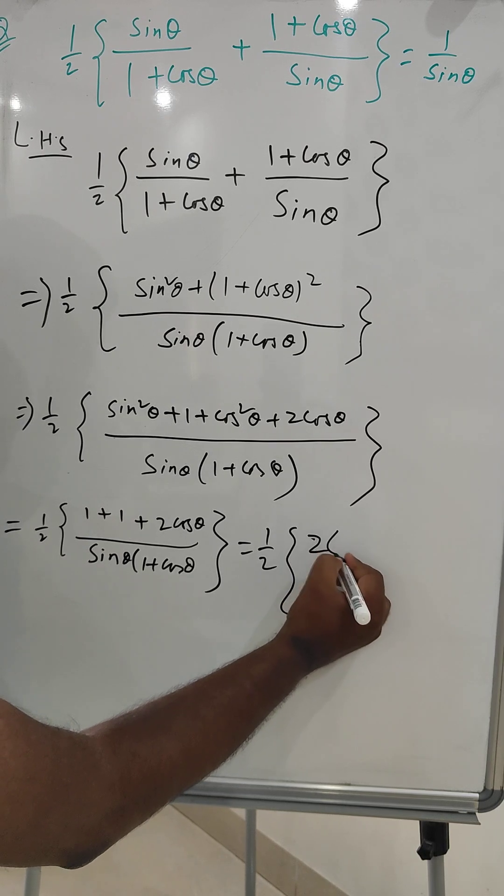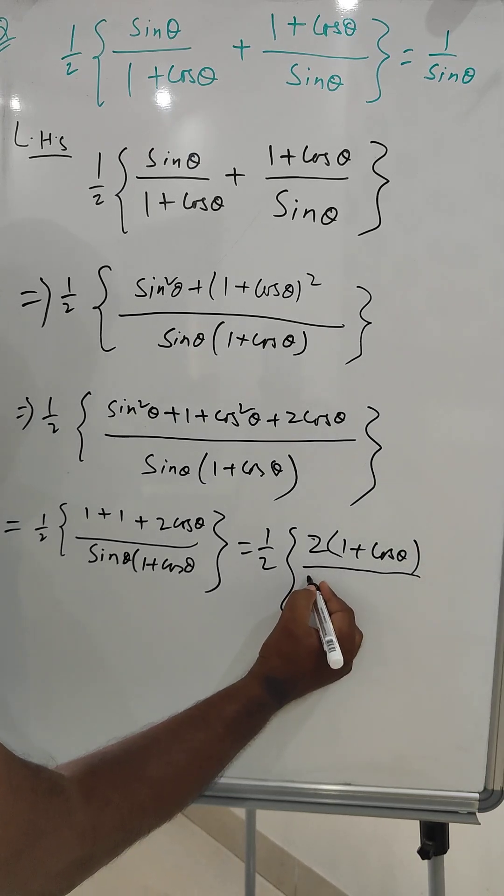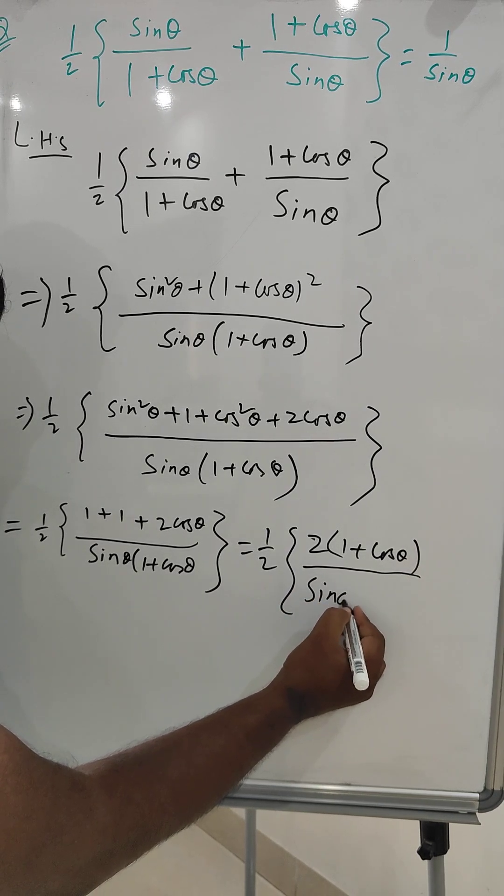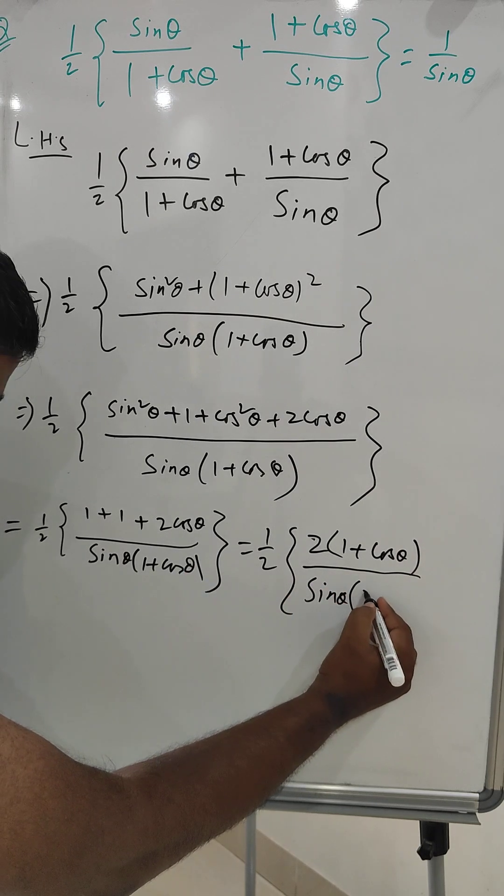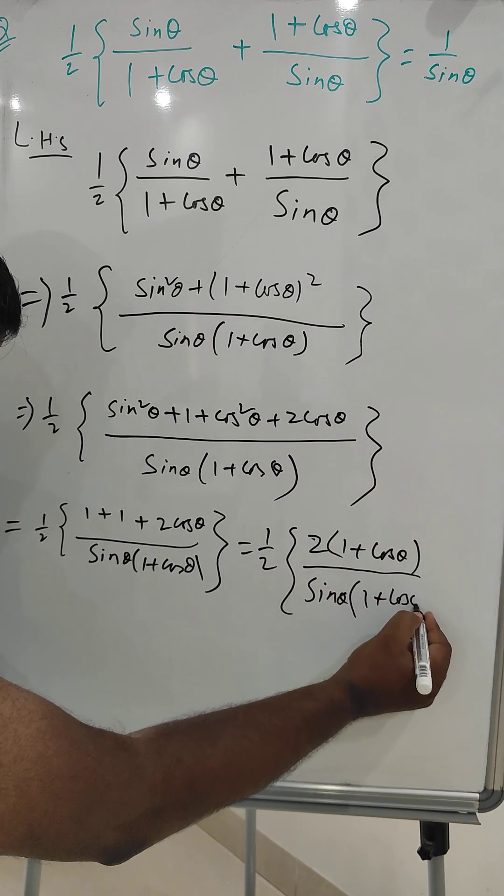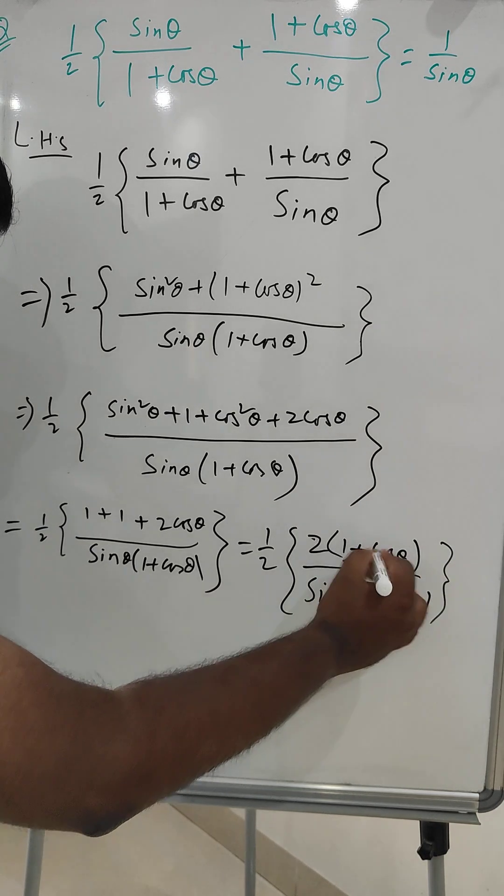So we have 2(1 + cos theta) in the numerator and sine theta (1 + cos theta) in the denominator. This (1 + cos theta) will be cancelled.